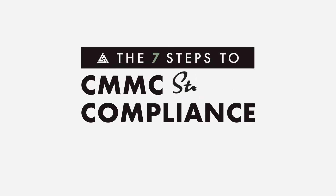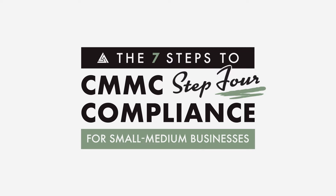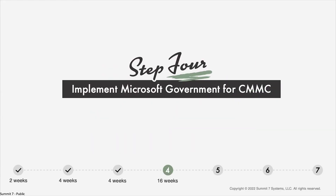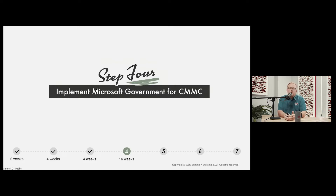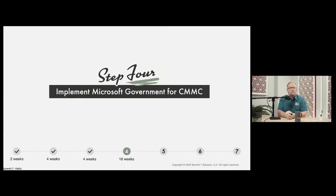We're now on Step 4: Implement Microsoft Government Cloud for CMMC. Step 1 took about two weeks — identifying existing contract requirements and future business needs. Step 2 was identifying assets, typically taking four weeks, classifying them from CUI to specialized assets, security protection assets, and contractor risk-managed assets. Step 3 was picking the right environment — all-in or enclave — for the different types of data.